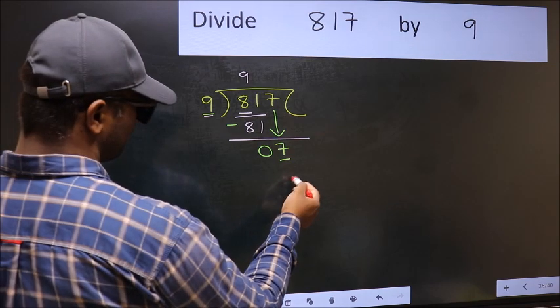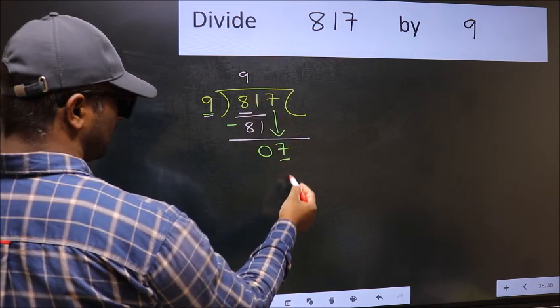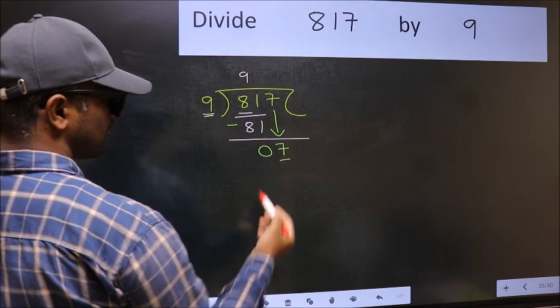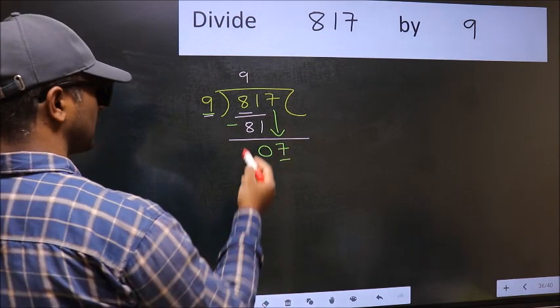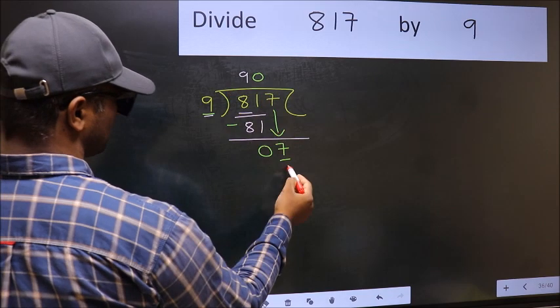If I take 1, we will get 9. But 9 is larger than 7, so what we should do is we should take 0. So 9 into 0, 0.